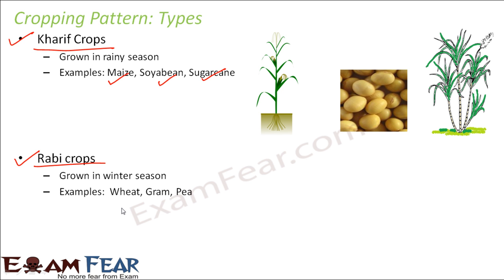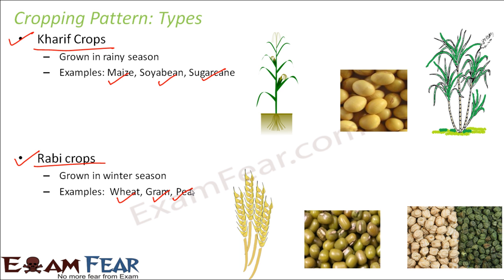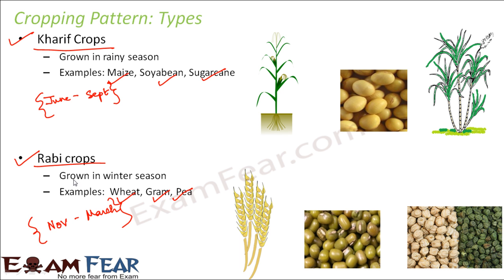Rabi crops do not want too much water, but they also do not want too much sunlight or heat. Although they need less water, summer is too hot for them. So plants like wheat, gram, and pea are grown during winter and are called rabi crops. Kharif crops are grown from June to September, while rabi crops are grown from November to March.